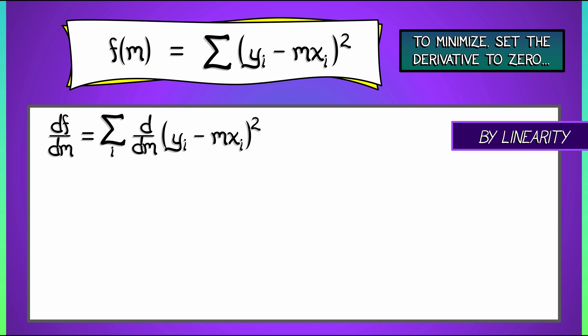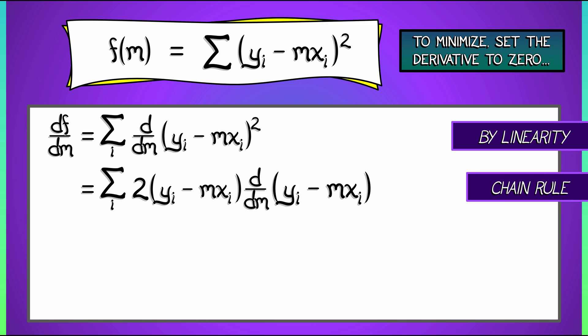Now, how do we do this? Well, by the chain rule, if we want to take the derivative of something squared, it's two times something times the derivative of that something. In this case, what we get is the sum over i of two times quantity yi minus mxi times the derivative with respect to m of yi minus mxi.